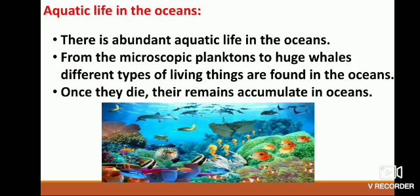Aquatic life in the oceans: there is abundant aquatic life in the oceans, from microscopic planktons to huge whales. Different types of living things are found in the oceans. Once they die, their remains accumulate in oceans. All rivers flowing from mountains or hilly areas finally meet the oceans. Mud from land, trees and bushes, dead remains, etc. enter the ocean with river water. The dead remains decompose, releasing different minerals and salts into the ocean water.